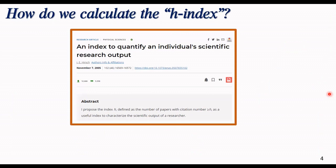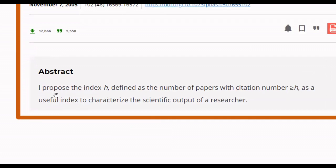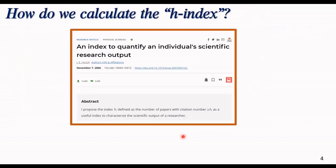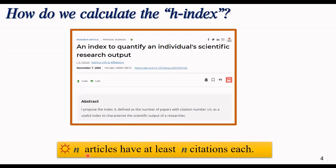How do we calculate the H-index? In the main paper of Hirsch with this title, he put a good definition for H-index. The abstract of this paper has two lines. He said that I propose the H-index, defined as the number of papers with citation numbers greater or equal to H, as a useful index to characterize the scientific output of a researcher. N articles have at least N citations H. We can better understand this concept by some examples.